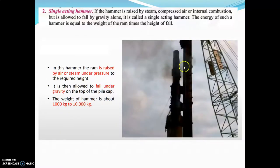The second one is single acting hammer. If the hammer is raised by steam, compressed air or internal combustion, but is allowed to fall by gravity alone, it is called a single acting hammer. The energy of such a hammer is equal to the weight of the ram times the height of fall. The ram is raised by air or steam under pressure to the required height and then allowed to fall under gravity on the top of the pile cap. The weight of the hammer is about 1000 kg to 10,000 kg.